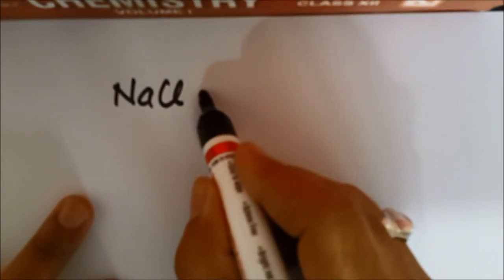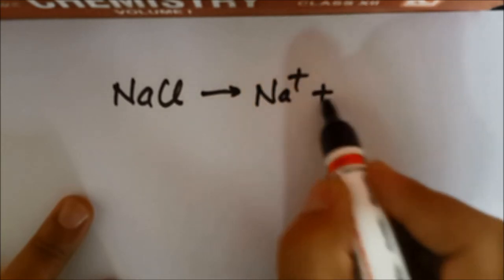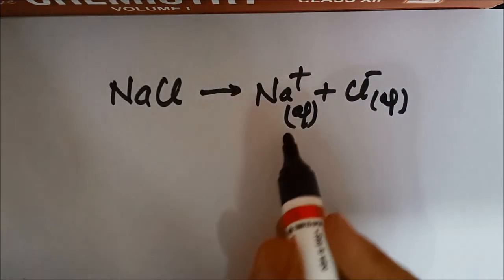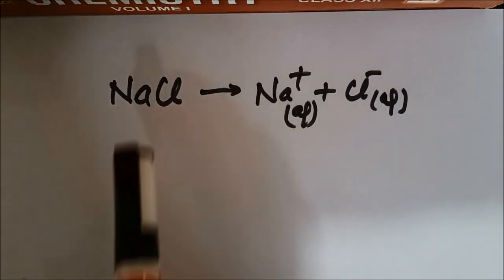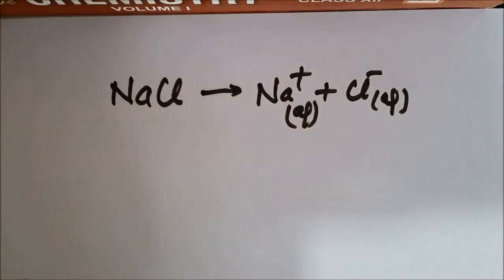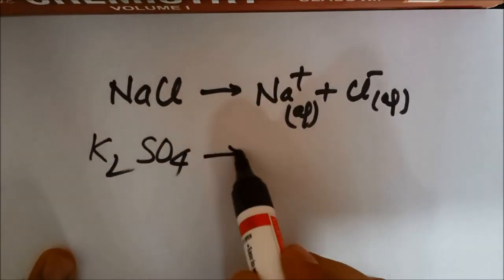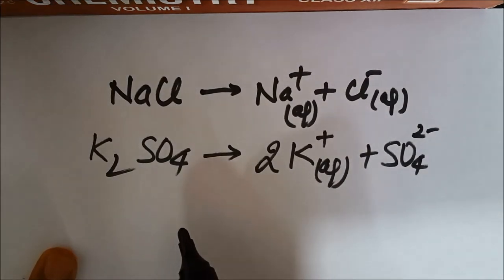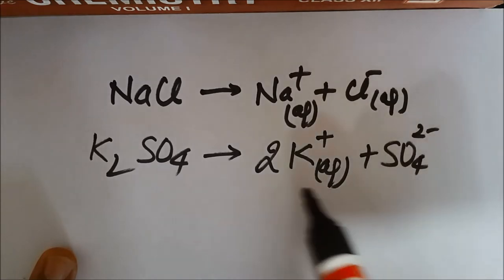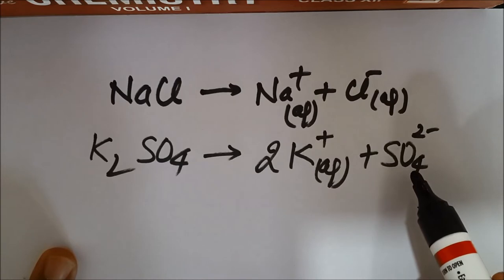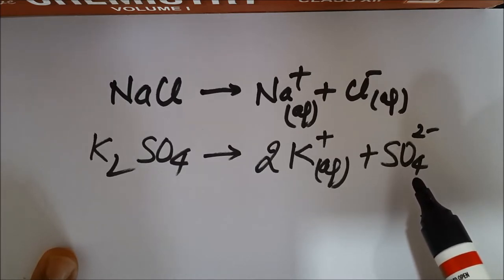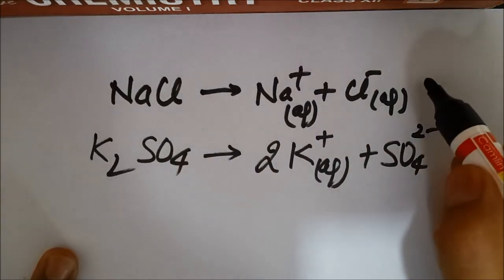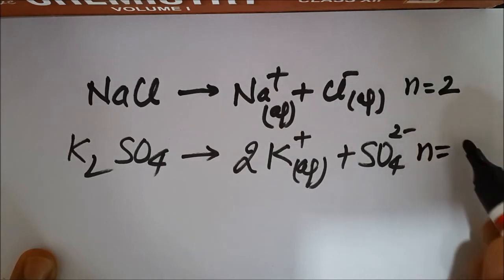Take the example of NaCl. When we dissolve NaCl in water, we get Na⁺ and Cl⁻. So the number of particles before dissociation is 1, and after dissociation it becomes 2. Similarly, K₂SO₄ dissociates into 2K⁺ and SO₄²⁻, so 1 particle becomes 3. Since colligative properties depend on the number of particles, N for NaCl is 2 and N for K₂SO₄ is 3.